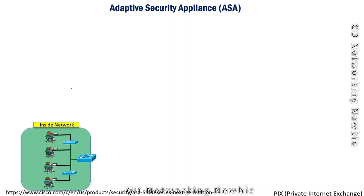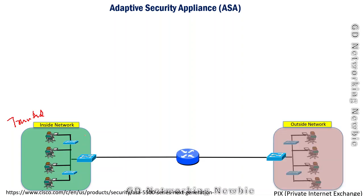In this video we are going to discuss about ASA, which stands for Adaptive Security Appliance — basically a firewall. To understand this, let's suppose we are working in an organization, maybe a campus or building. That organization has its own infrastructure, its own network, which we call the inside network or the trusted network. Our organization also needs to communicate with the outside world, which we call the outside network — for example, the internet.